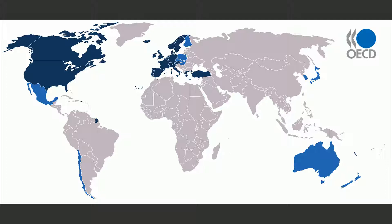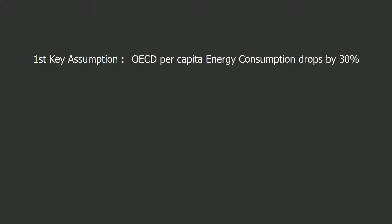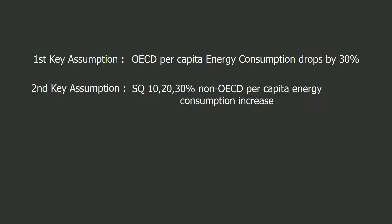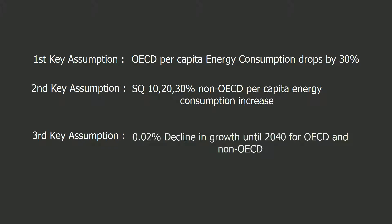Here are some of my key assumptions. First, the OECD energy per capita decreases by 30% as an effect of increased energy efficiency. Second, for non-OECD, four models are proposed: status quo and a 10, 20, and 30% increase in energy per capita demand. Third, we are going to slow down population growth by 200% each year until the growth rate reaches 0%.